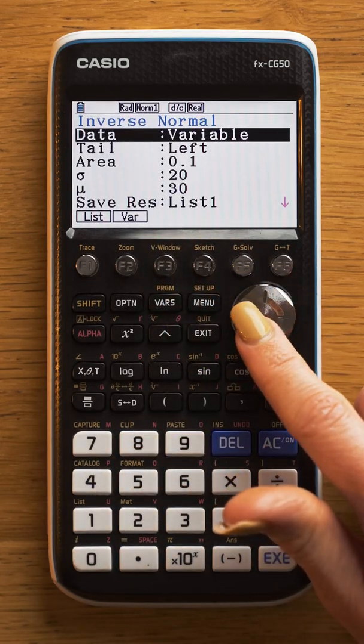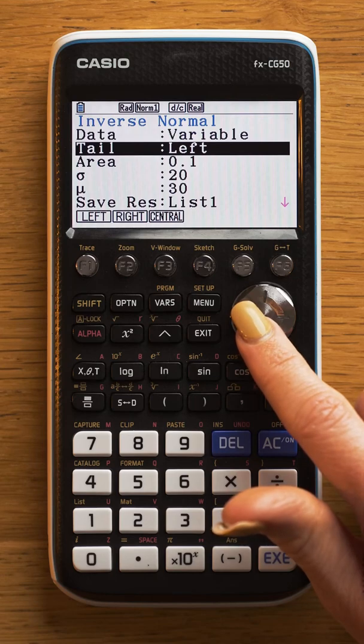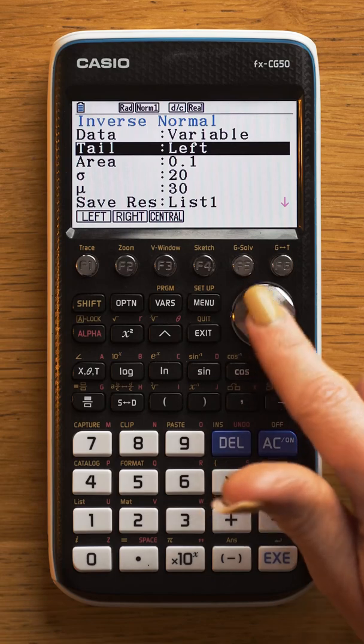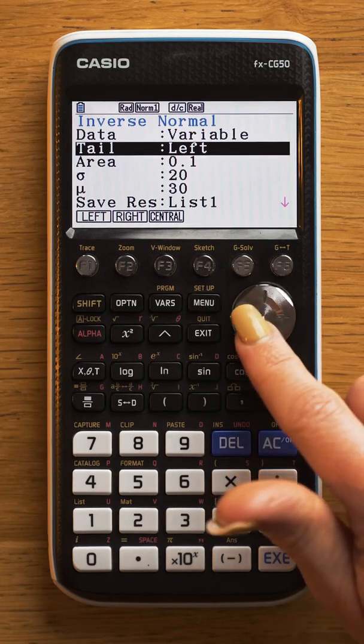Make sure that the data is variable. You've got three options: a left tail, a right tail, or a central tail, depending on if they've given you a less than, a greater than, or two values in between.